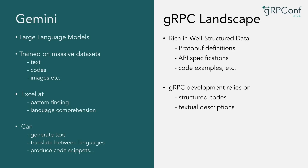How does this relate to the gRPC landscape? gRPC is backed by a thriving open-source community, very rich in well-structured data such as protobuf definitions, API specifications, and countless code examples. All this data can serve as a perfect training ground for large language models like Gemini. gRPC development aligns well with the strengths of LLMs, making it a well-suited area to adopt large language model technologies.